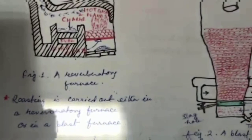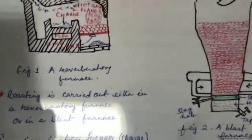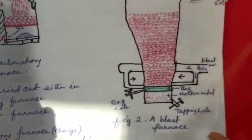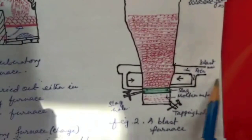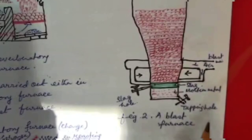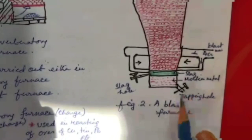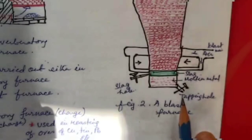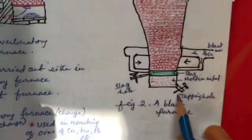Blast furnace is a long vertical furnace made of steel plates lined inside with fire clay bricks. It is provided with an arrangement for blowing in air near the base, as shown in figure. It is also provided with a hole for removing the slag and a tapping hole for taking out the metal.